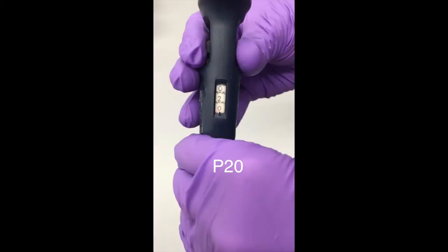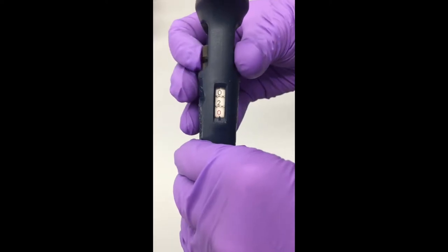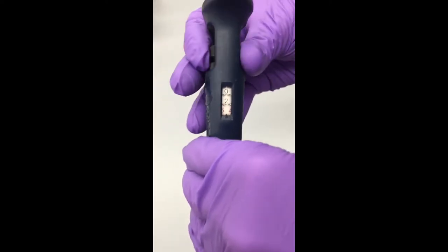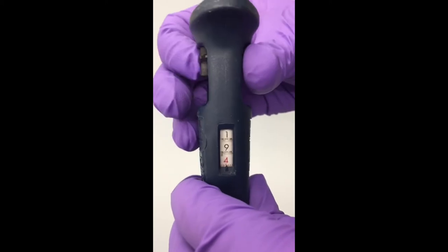This is the volume display and indicates how much fluid will be drawn up. For the P20, the red number indicates a decimal point, so this number reads 2.0. As you can see, turning the volume adjustment changes the reading on the volume display.